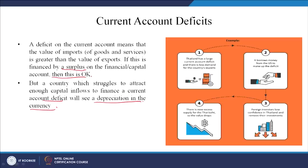Let us take this example. Thailand has a large current account deficit. When there is a current account deficit, we have understood that exports are much less than imports, so the ability to earn dollars is less. When there is a current account deficit and less demand for the country's exports, exports are going down. In order to adjust its current account deficit, Thailand would borrow money from the US or the IMF to make up this deficit.